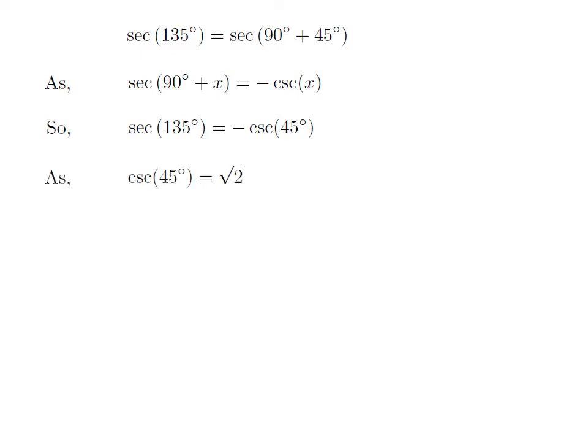We know the value of cosecant of 45 degrees is equal to square root of 2. So, the value of secant of 135 degrees is equal to minus square root of 2.